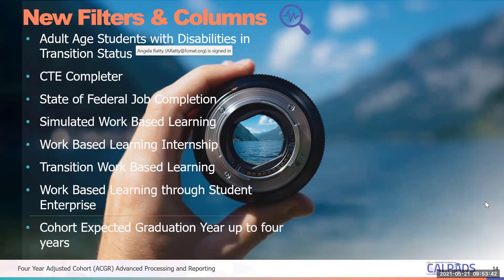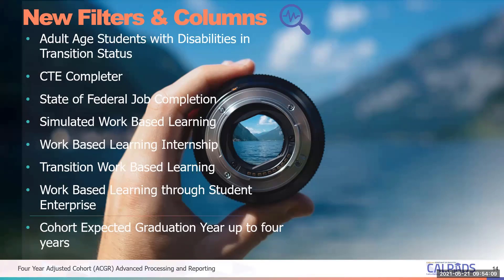The adult age students with disabilities and transition status was there previously as post-secondary transition — they changed the name. And by popular request, we've added the CTE completer. CTE completers help determine your college and career indicators, your CCIs on the California dashboard. There's a filter option for this that's been added for this year, so you'll be able to select that in the filter and the results that come up in the reports would be the CTE completers.